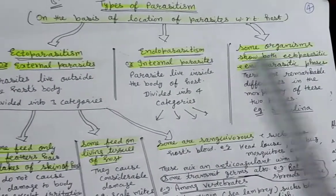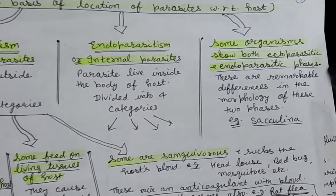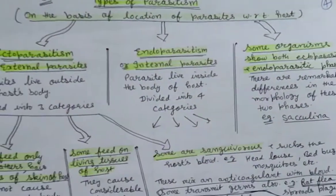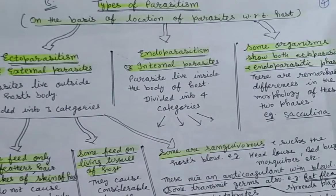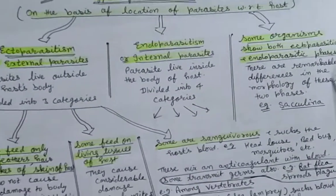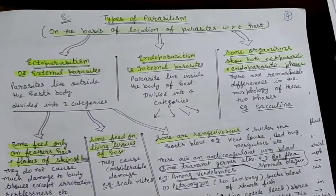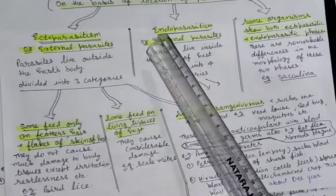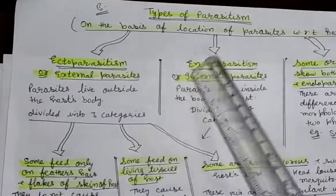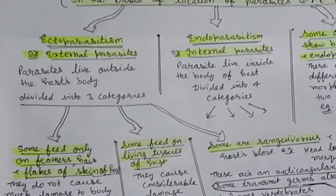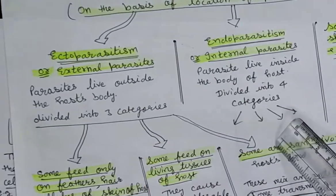There are also some organisms which show both ectoparasitic and endoparasitic nature. Now we have studied all 3 types of parasitism in detail. First of all, ectoparasitism — the parasite lives outside the host body. On this basis, ectoparasitism is divided into 3 categories. You can see that I have divided ectoparasitism into 3 types, shown by 3 arrows representing the 3 categories.